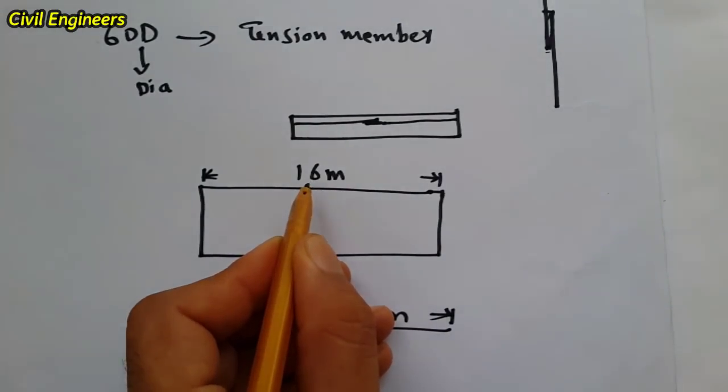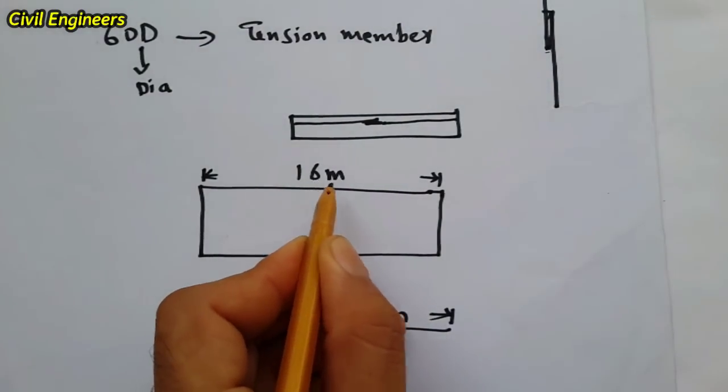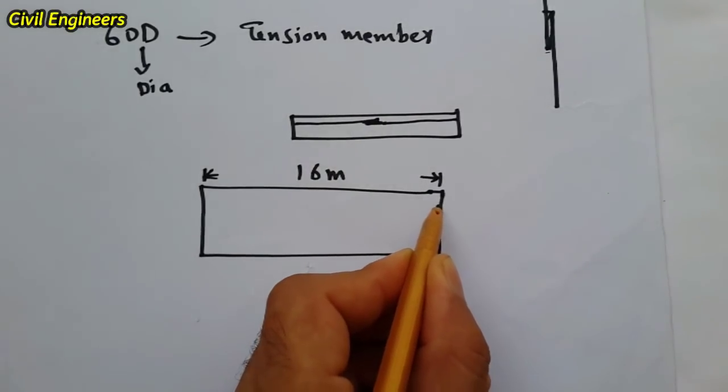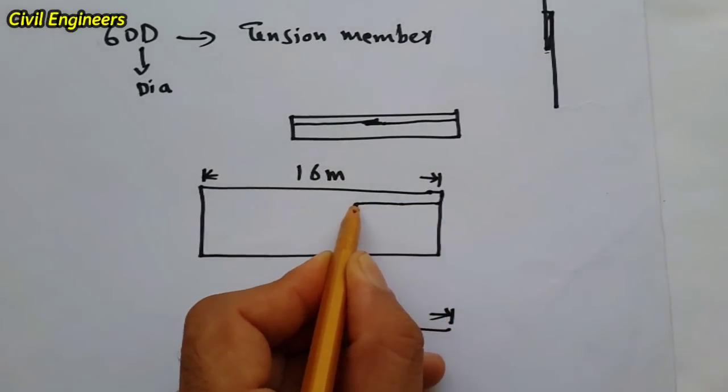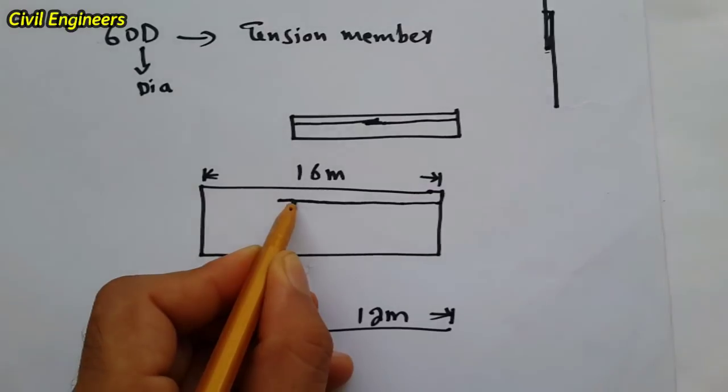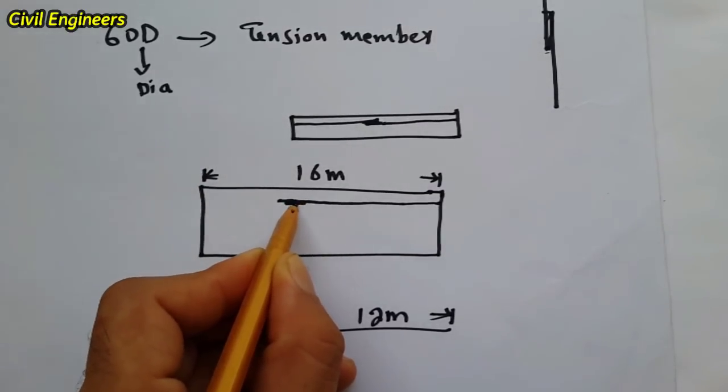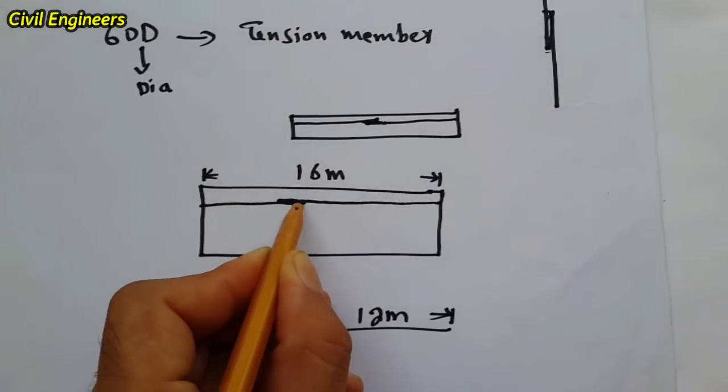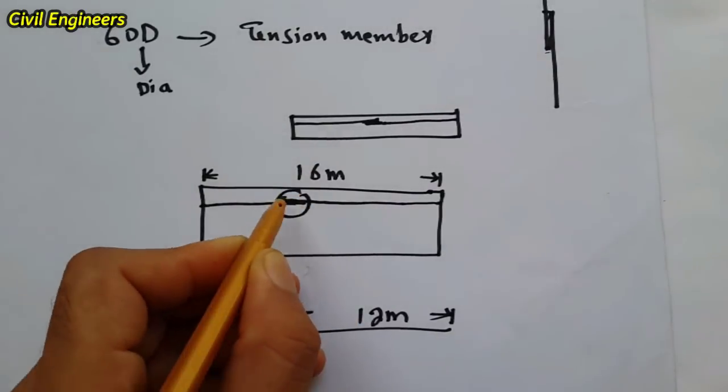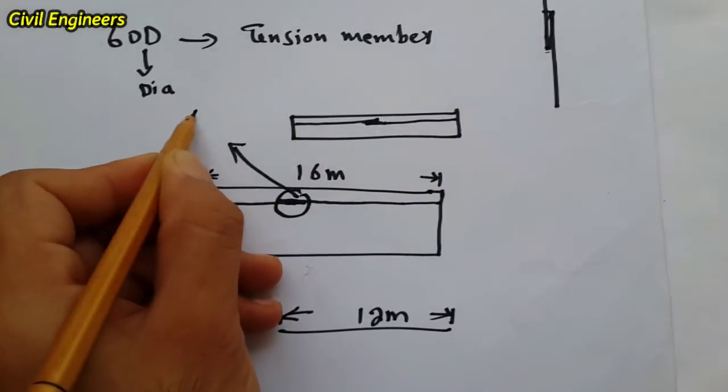Here we require a design length of 16 meter in a slab, so we will overlap one steel with another. If the first steel is 12 meter, we will place the other steel from here. This point is called lapping length.